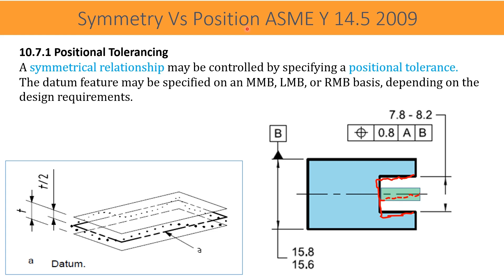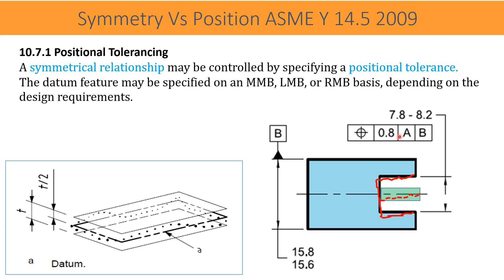Let us find the relationship between symmetry and position with documentary evidence. In ASME Y14.5 2009 version, the following statement was found for positional tolerancing: 'A symmetrical relationship may be controlled by specifying a positional tolerance, and the datum feature may be specified on MMB, LMB, or RMB basis depending on the design requirement.' This clause clearly indicates that symmetry may be controlled with a position tolerance.